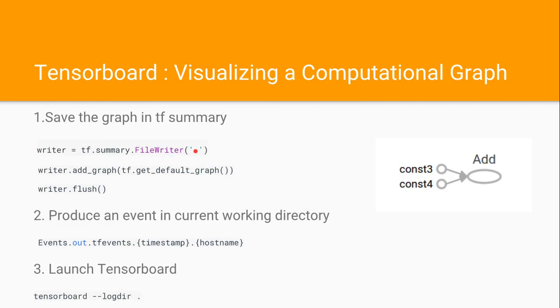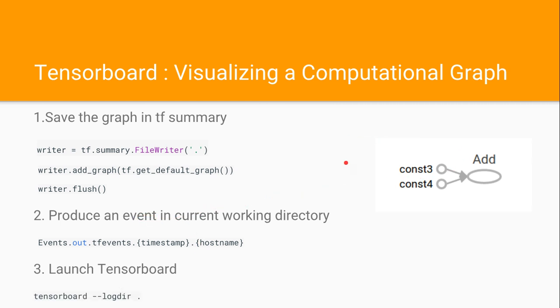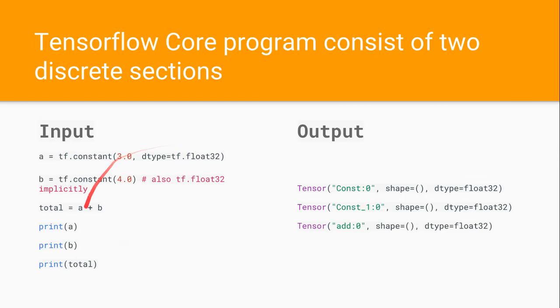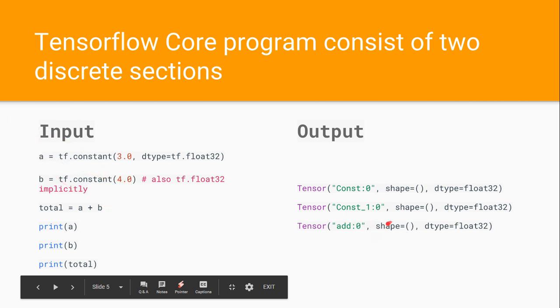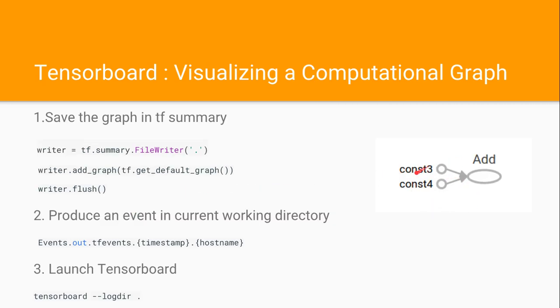Then here comes TensorBoard, which is for visualizing a computational graph. There are three steps to use TensorBoard: save the graph with tf.summary.FileWriter, then writer.add_graph, writer.flush. Then produce an event in the current working directory and launch TensorBoard. With TensorBoard, you can see the two constants and one total variable in which we have added a plus b. Basically, it is defined as constant 3, constant 4, and one add variable. In TensorBoard, we can visualize our computational graph.